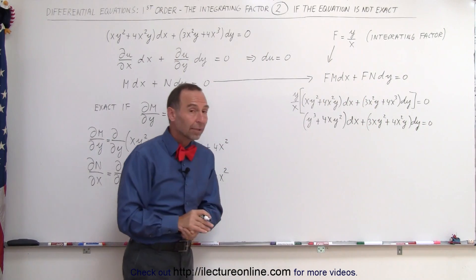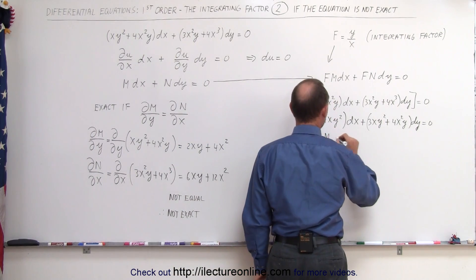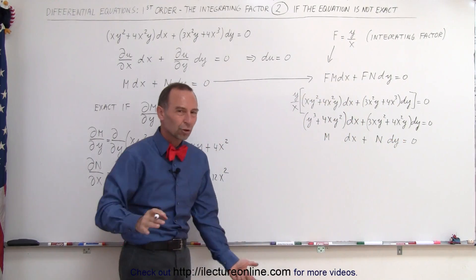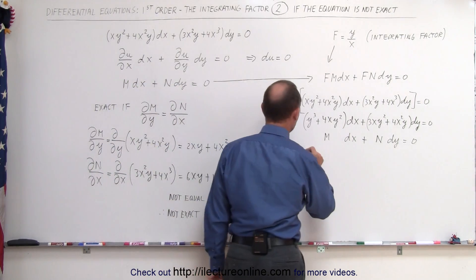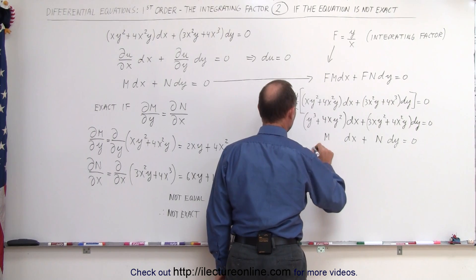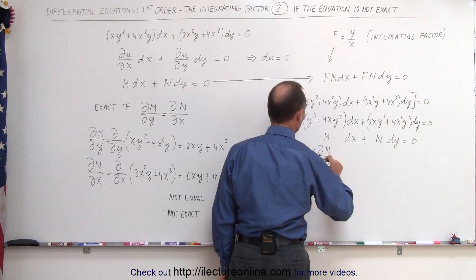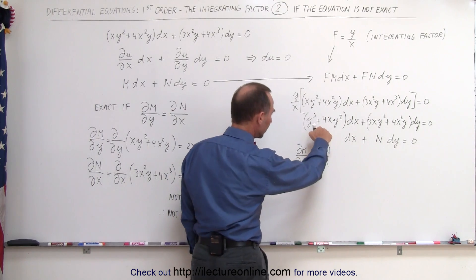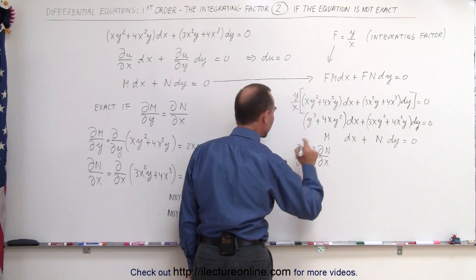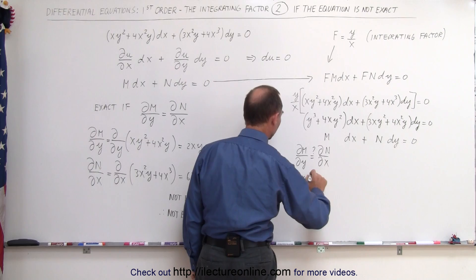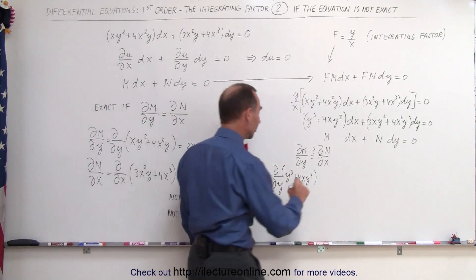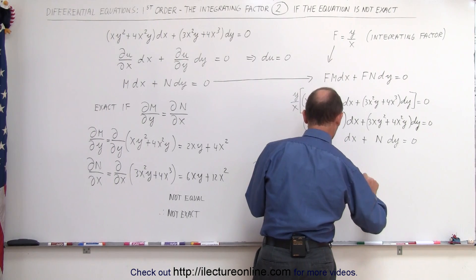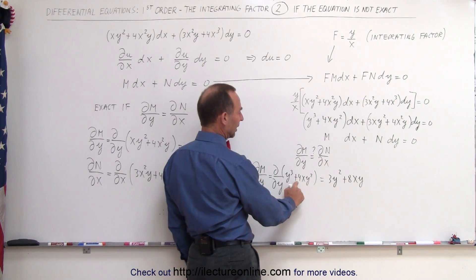Now we have a new M and new N, and let's see if this is indeed an exact equation. The partial of M with respect to y equals the partial with respect to y of y³ plus 4xy². Remember, x is a constant, so this equals 3y² plus 8xy.